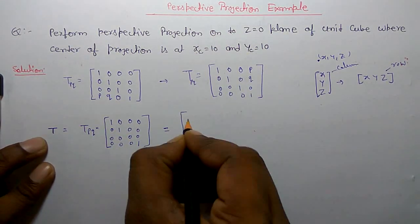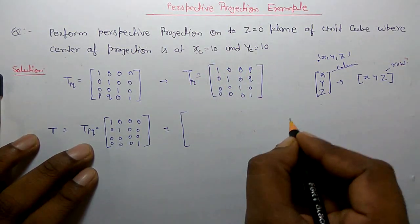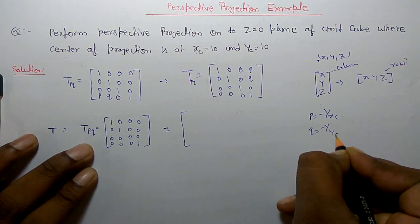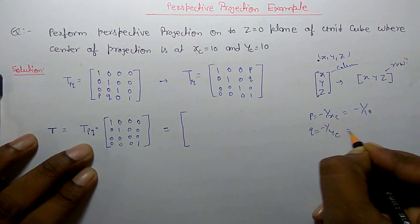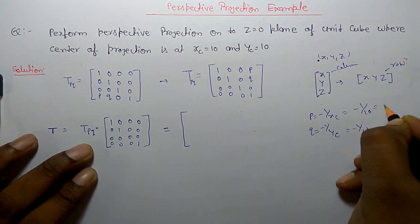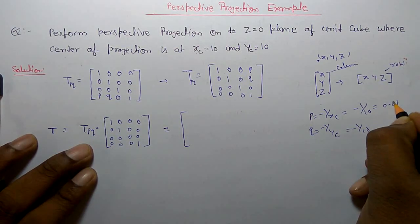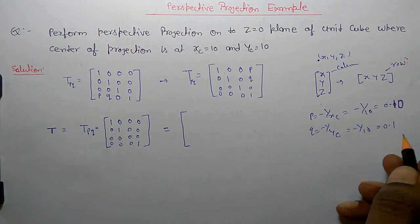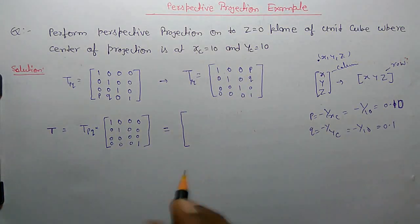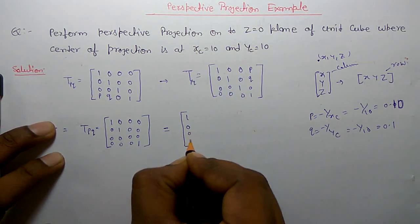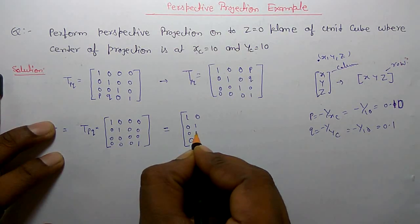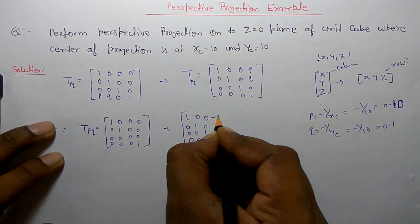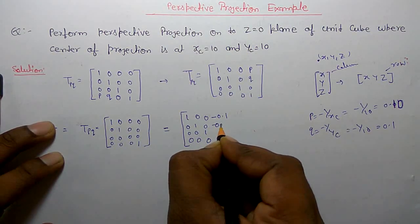Transform T P, Q. The key values are P equal to minus one by XC and Q equal to minus one by YC, so P equal to minus one by ten and Q equal to minus one by ten. So the values of P and Q are both minus 0.1. Putting these values in the matrix: P equal to minus 0.1, multiplied here.